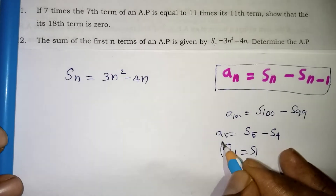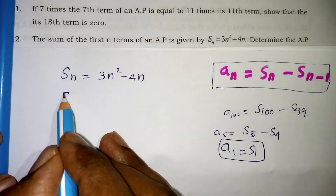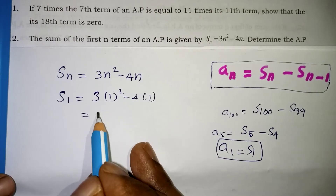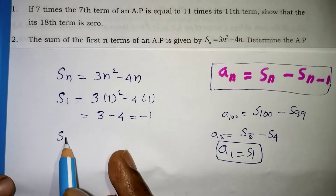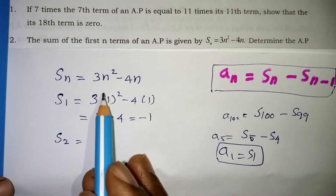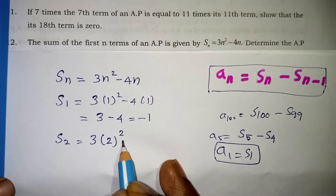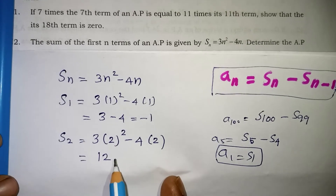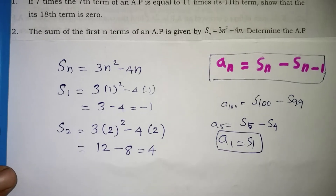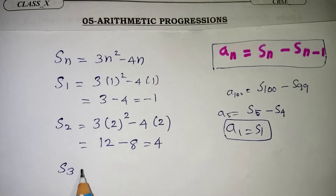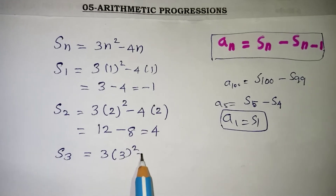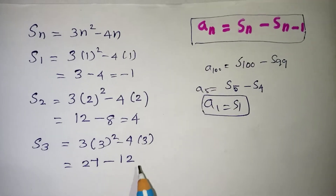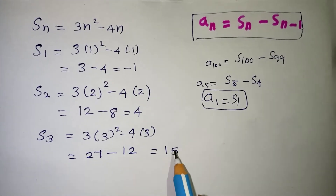Note that A1 = S1. Substituting N = 1: S1 = 3(1²) - 4(1) = 3 - 4 = -1. For S2, substitute N = 2: 3(4) - 4(2) = 12 - 8 = 4. For S3, substitute N = 3: 3(9) - 4(3) = 27 - 12 = 15. So S1 = -1, S2 = 4, S3 = 15.